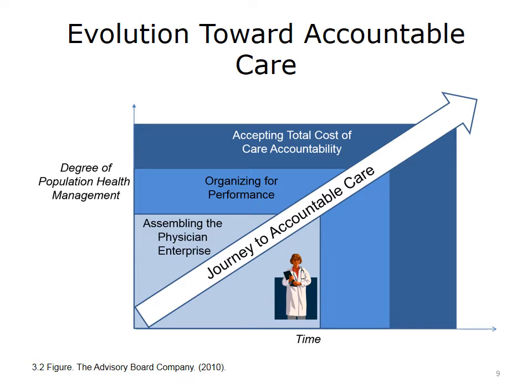As represented in this graphic, in terms of degree of population health management, step one is assembling that physician enterprise — which can be a group of primary care physicians and a hospital, multi-specialty physicians, or any number of different models. Then we must organize for performance within that ACO, and finally accept total cost of care accountability for a population of patients. As the degree of population health management rises, so does the financial risk to physicians. This all happens over a period of time — the journey to accountable care.